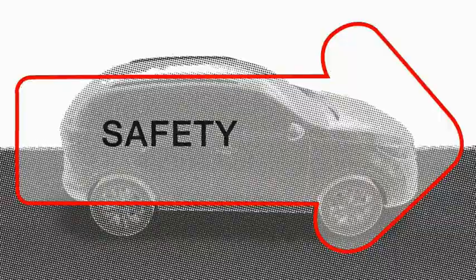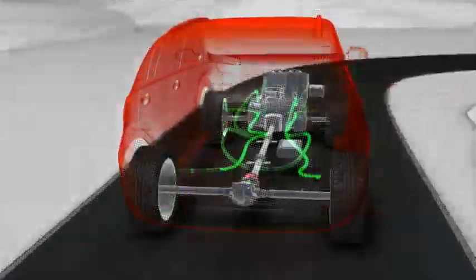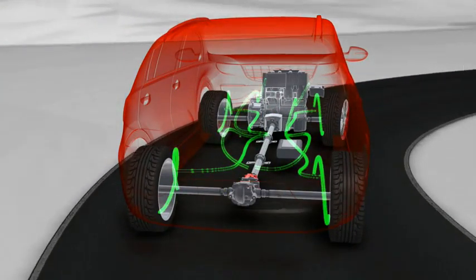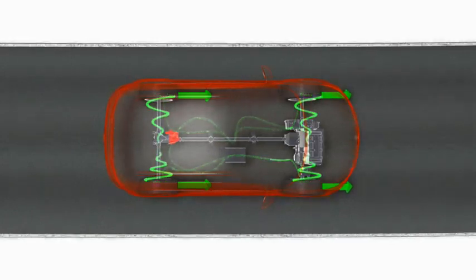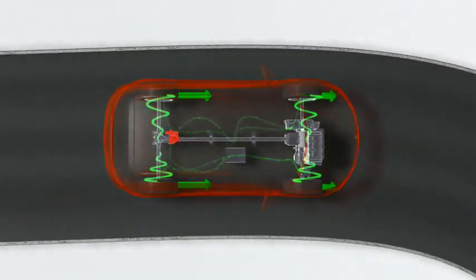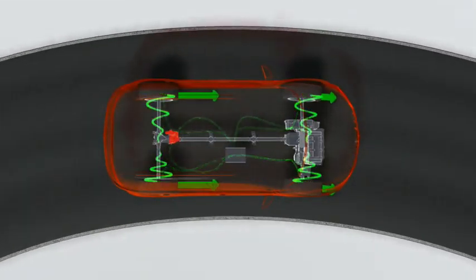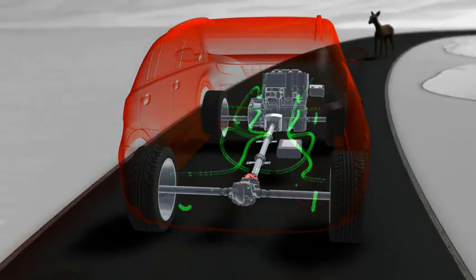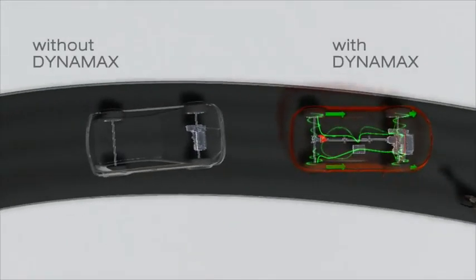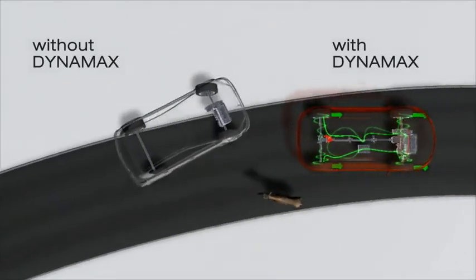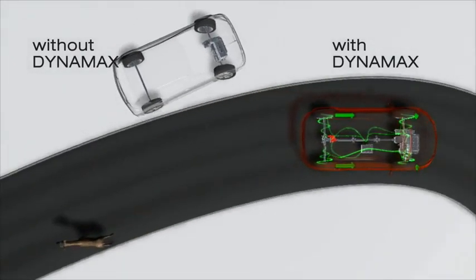Dynamax offers a higher level of safety by intelligently distributing traction forces. Depending on the current situation, the Dynamax system allocates the required amount of torque to the front and rear axles. In addition, Dynamax prevents unintended over- and under-steer by reducing unwanted traction forces to the front axle, optimizing control of the vehicle, and improving handling in every situation.